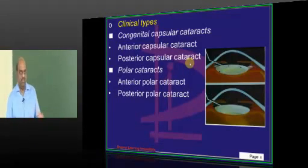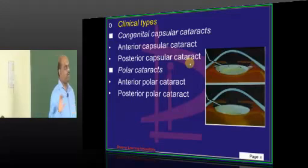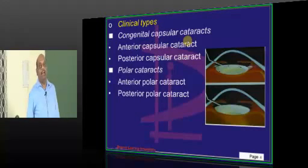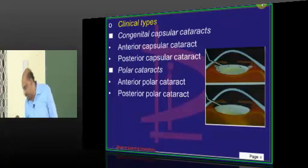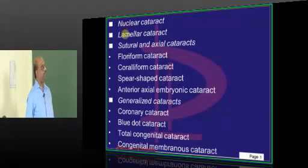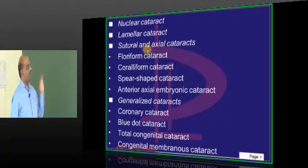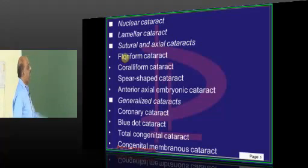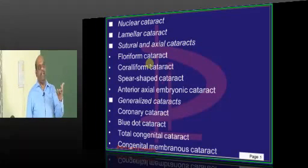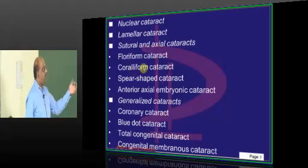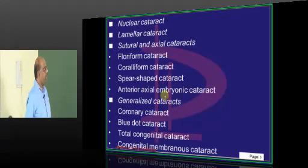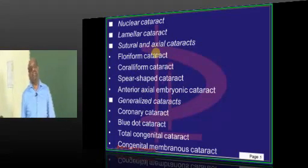The classification of cataracts is a very common exam question. You have congenital capsular cataracts — anterior capsular and posterior capsular. You have polar cataracts — anterior polar and posterior polar. You have nuclear, lamellar, and other varieties. Then you have sutural and axial cataracts which, depending on shape, may look like petals of a flower (floriform), coralliform, spear-shaped, or anterior axial embryonic type.